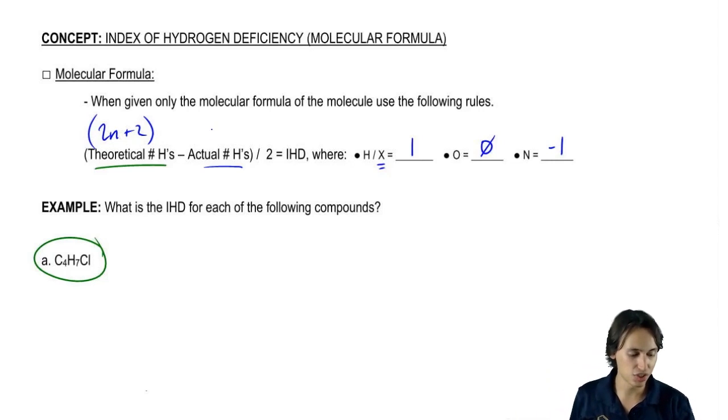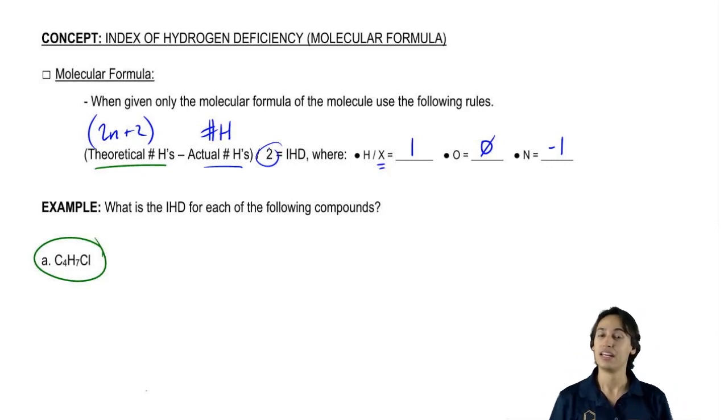So then finally I get that number. That number is going to go here. This is going to be number of H's total. Then I'm going to take that number and I'm going to divide it all by two, which is what I have here. And that's going to be your IHD. Now I know that sounds a little bit complicated, but once you get going with it, you can actually do it pretty fast.